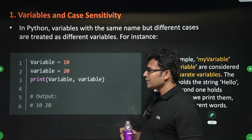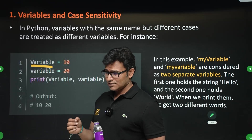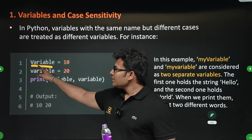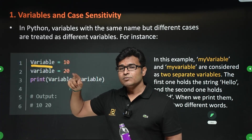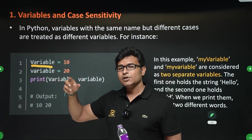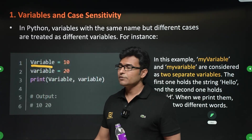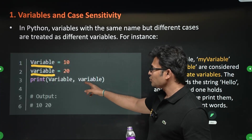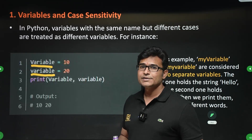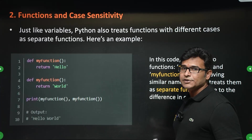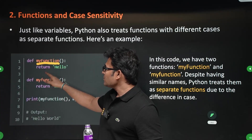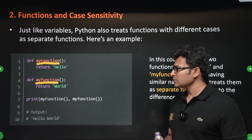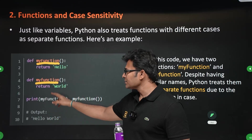In the case of variables, if you write a capital letter in the variable name — for example 'Variable' with capital V and 'variable' with small v — both will be considered as different variables. That is why when you print the values you get 10 and 20 in the output. In the case of functions also, they are case sensitive: 'myFunction' with capital F and 'myfunction' with small f are considered different functions — that is why you see the output 'hello' and then 'world'.